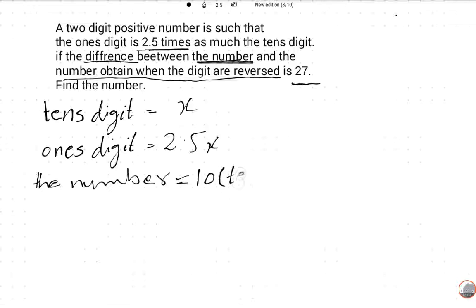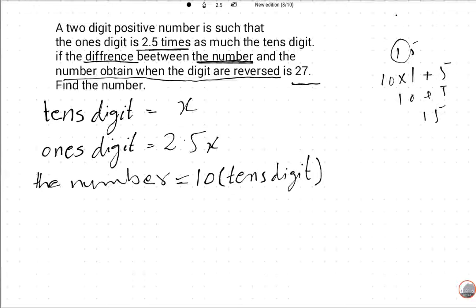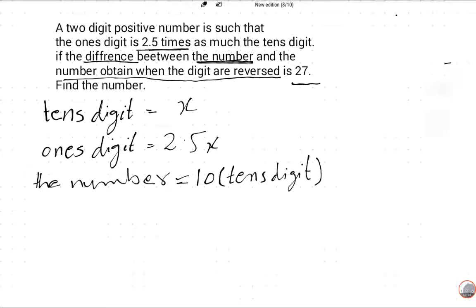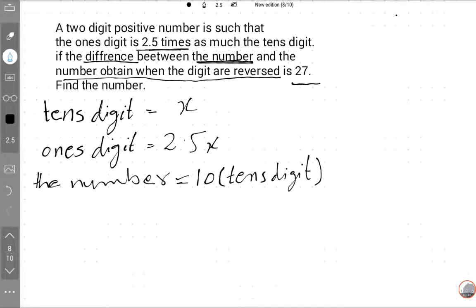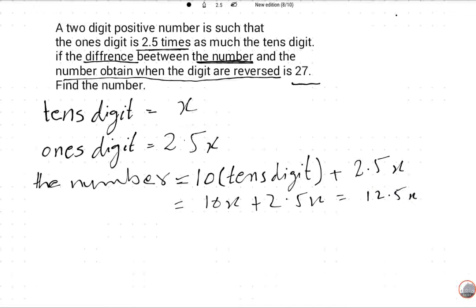First we will find the original number. The number equals 10 times the tens digit plus the ones digit. So it is 10 times x, plus the ones digit which is 2.5x. That gives us 10x plus 2.5x, which equals 12.5x. So the original number is 12.5x.